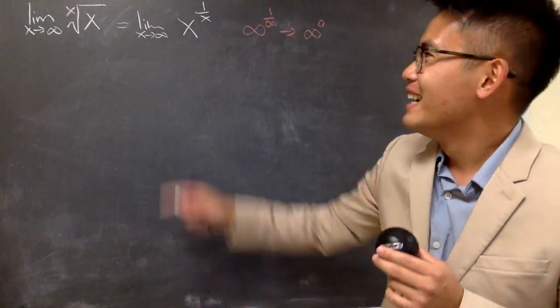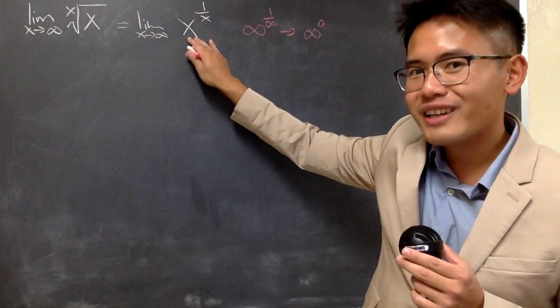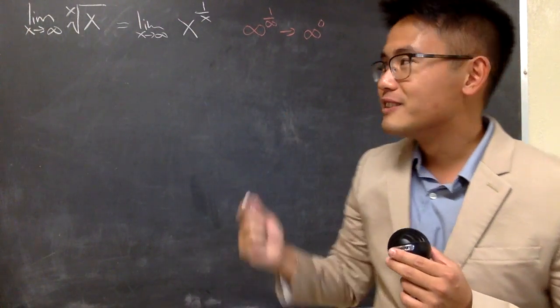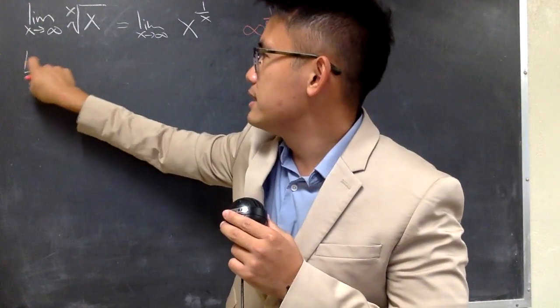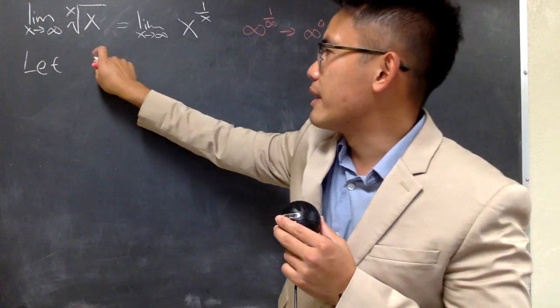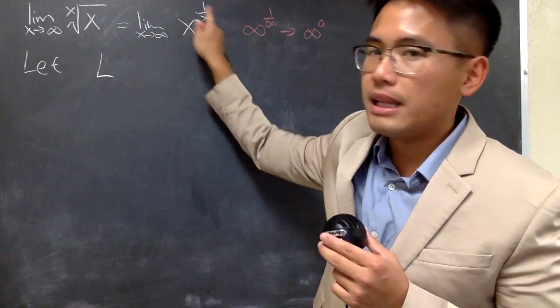So, let's do the work, right? And notice, the base right here is a function, and the power right here is also a function. So, I want to introduce the natural log. And the style of doing this is that I will just call some number, let's say, L, to be this limit.